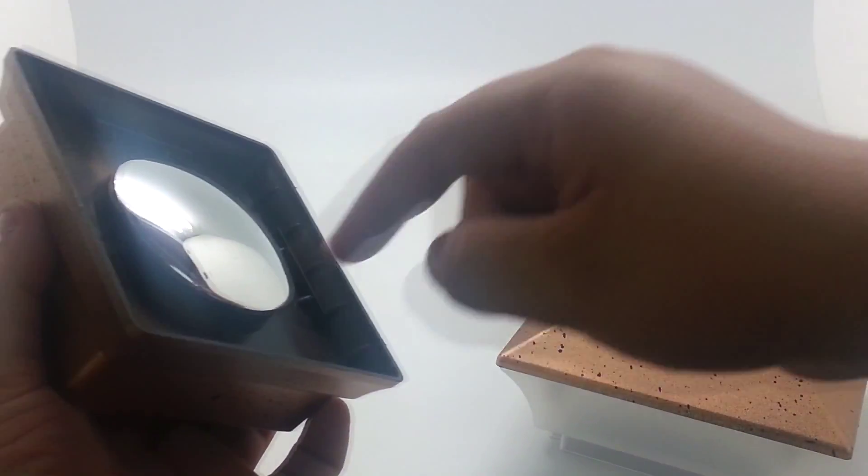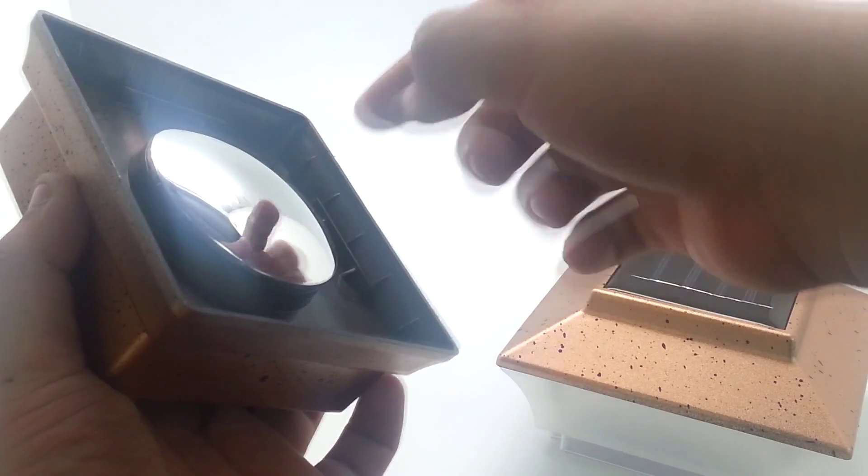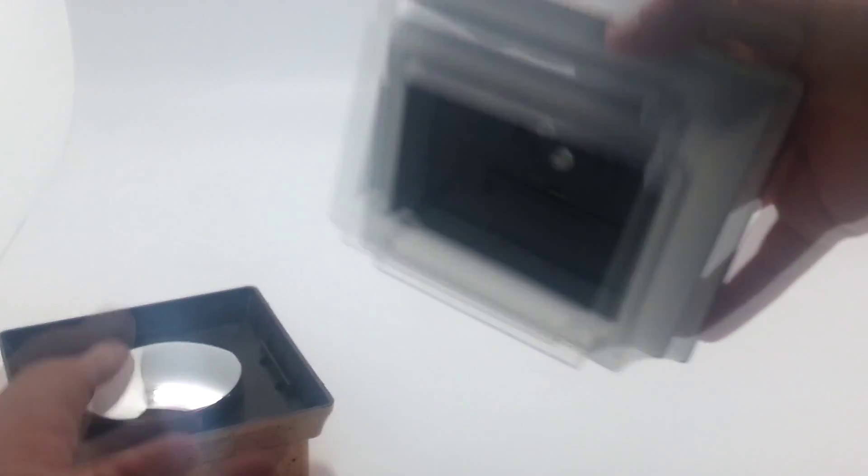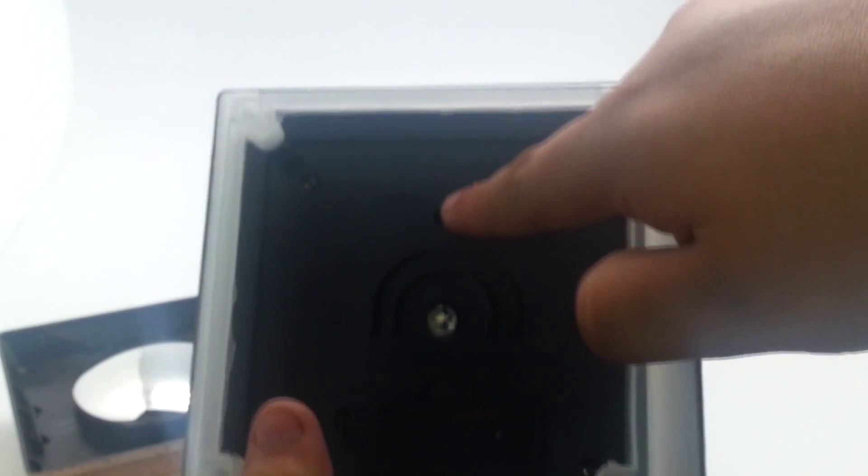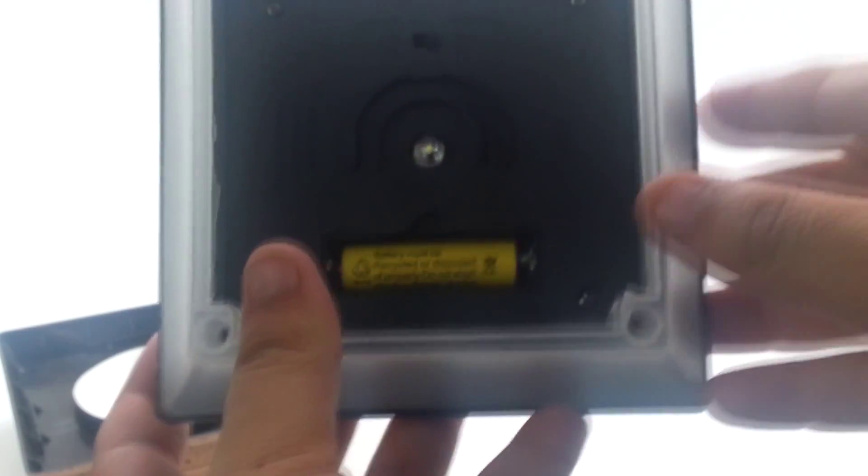Inside the solar light is one reflector to amplify the light. Also there's one manual switch, one LED light bulb, and one rechargeable NiCad AA battery.